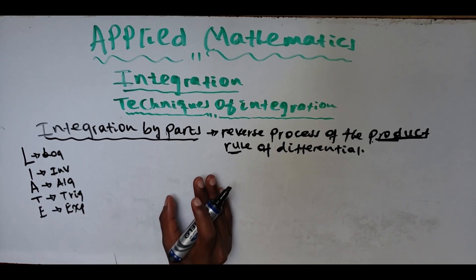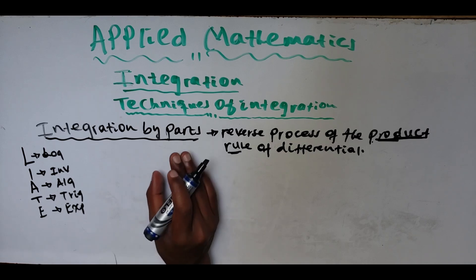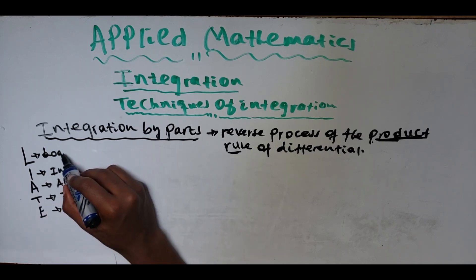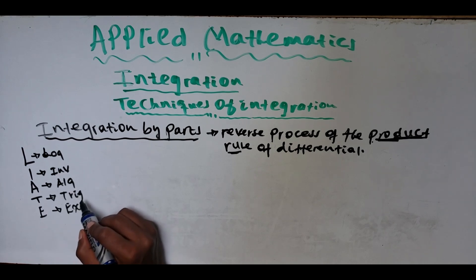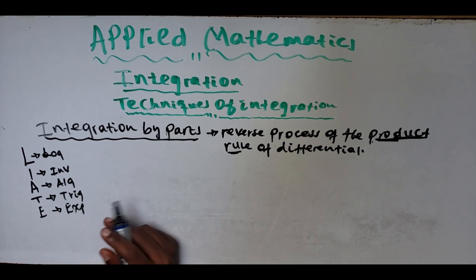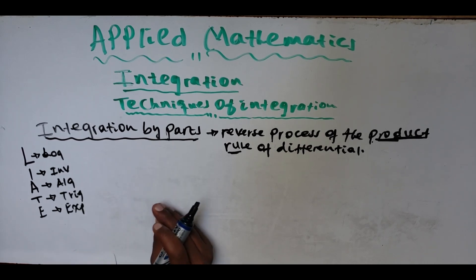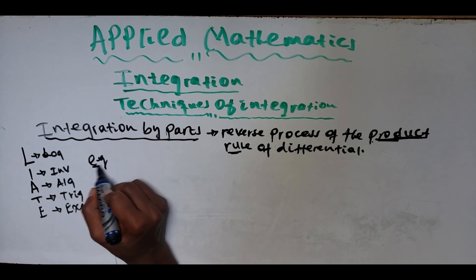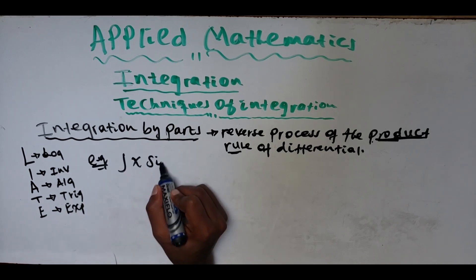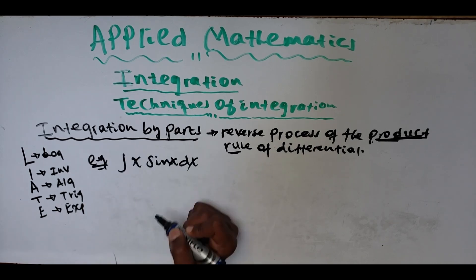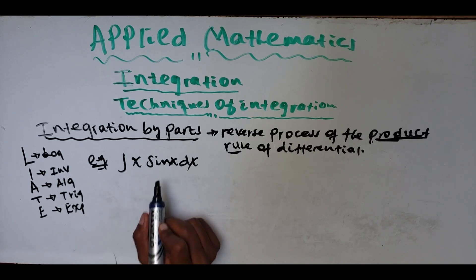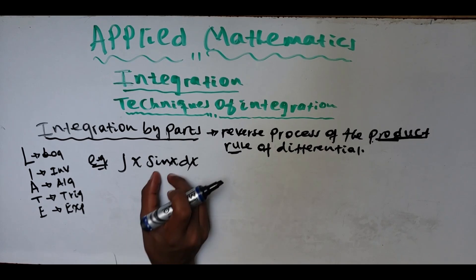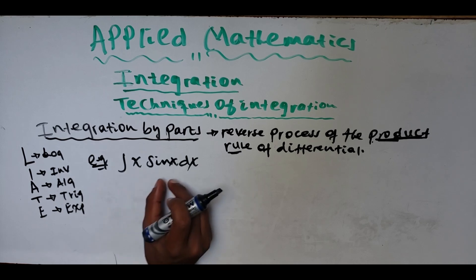LIATE gives the order of precedence when solving integration by parts. If we have logarithm, inverse, algebraic, trigonometric, and exponential functions, we use this order. Let me take an example: the integral of x sin(x). We cannot solve this by substitution because we cannot substitute either term to simplify the integral.